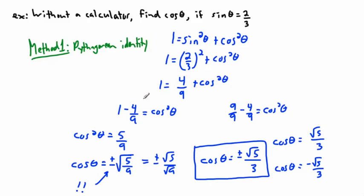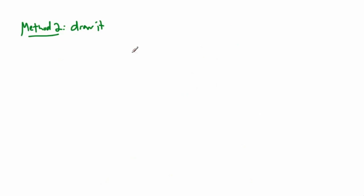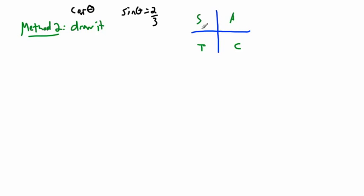Now let's verify with method two — drawing it. We know sine theta equals two over three. Using CAST, where are the quadrants where sine is positive? Sine is positive in the first quadrant, where all are positive, and in the second quadrant where just sine is positive. So there are two places where this is possible, meaning two answers.